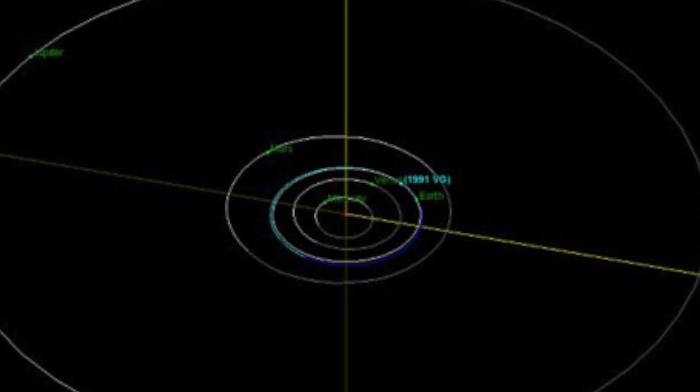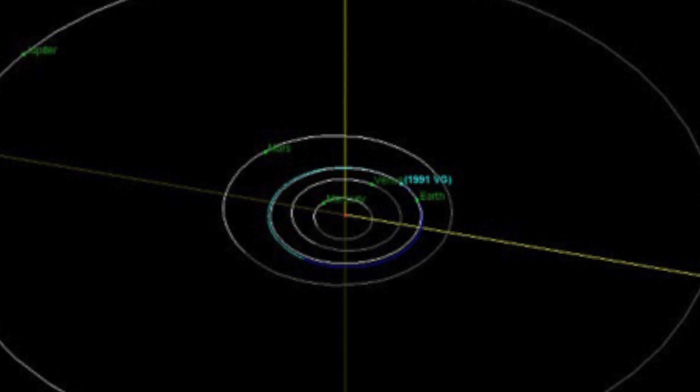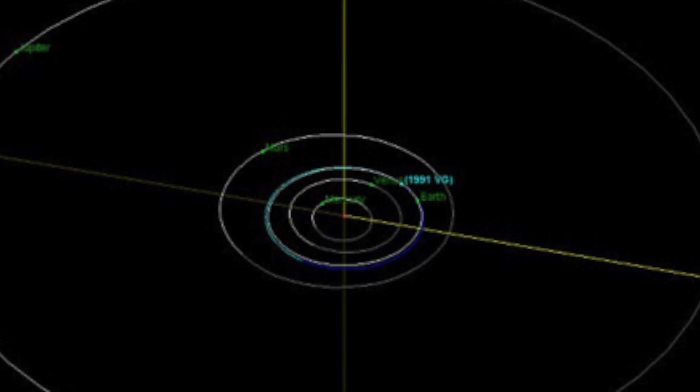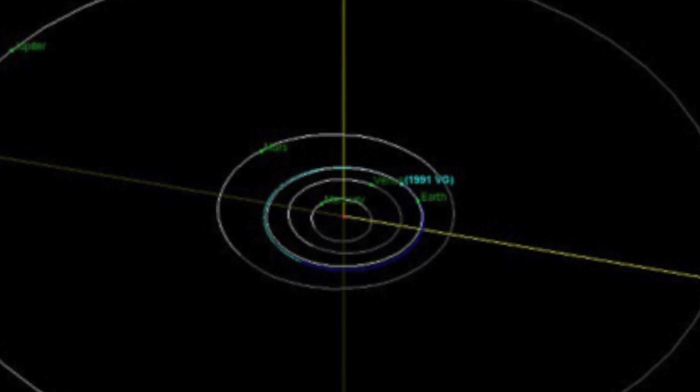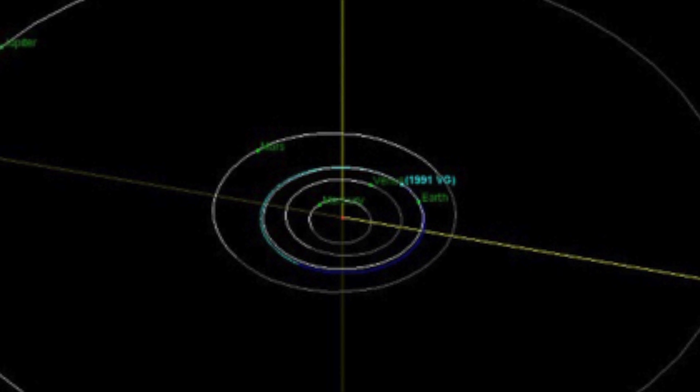1991 VG was first spotted in 1991 by astronomer James Scottie. It's unusual because of its strange rotation and longevity in space. As well as aliens and space junk, one theory is it may be a small meteor.